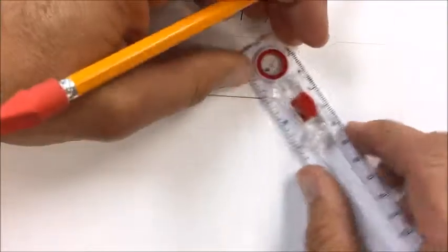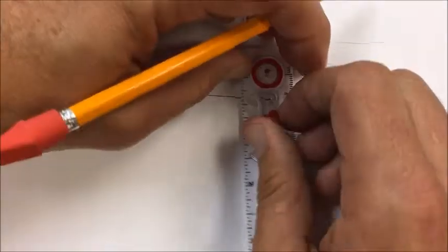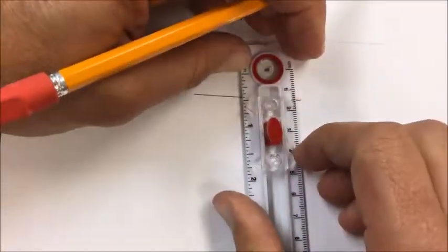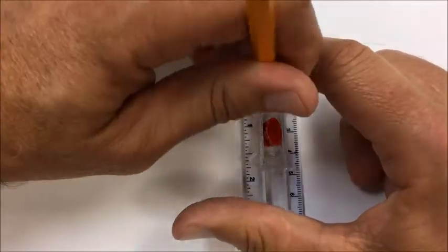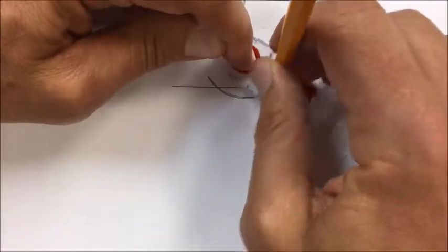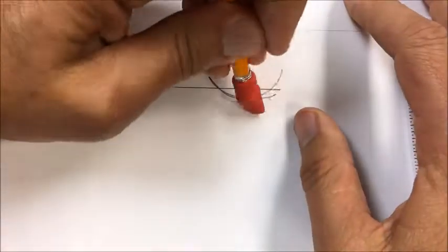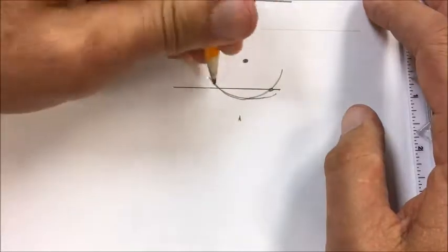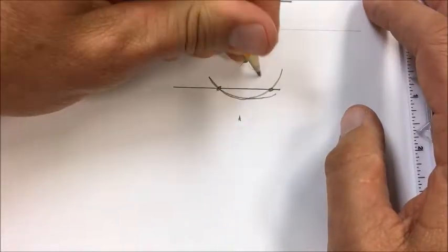I'm going to do the same sort of thing here. So get some length that's a little longer than that distance. Oops, that moved a bit. So at this point and this point, those are the same distance from that.